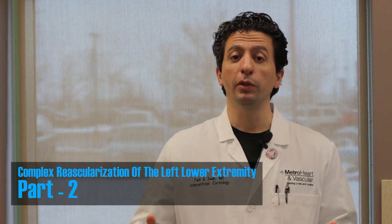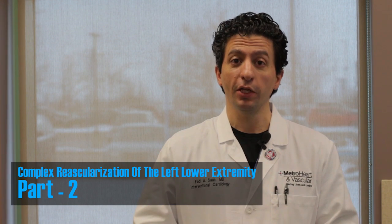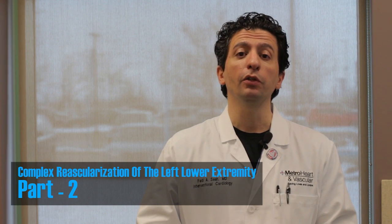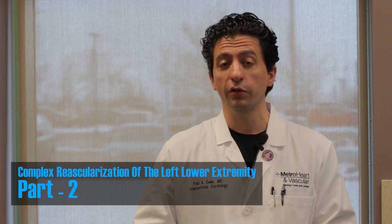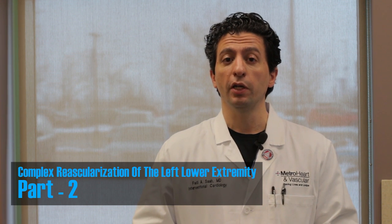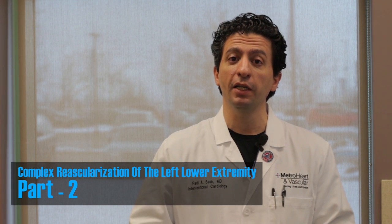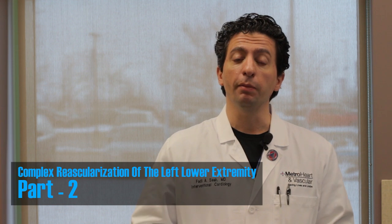Welcome to part two of our critical limb ischemia CLIglobal.com presentation. In part one we went through the complex revascularization of the left lower extremity utilizing the modified Schmidt technique, and we managed to achieve one vessel runoff via the posterior tibial artery. If you notice the last image of part one, we lost flow to the anterior tibial artery.